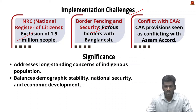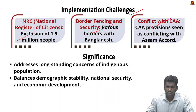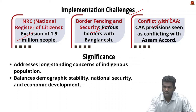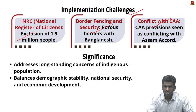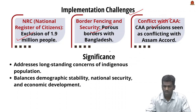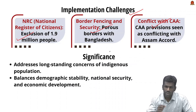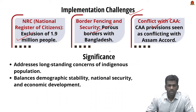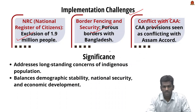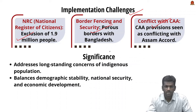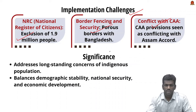There is also conflict between the Assam Accord and the Citizenship Amendment Act (CAA). The CAA grants citizenship to certain groups of immigrants who arrived by December 31, 2014, which conflicts with the complete blockage of illegal immigrants mentioned in the Assam Accord. This conflict has led to many protests in Assam. The Assam Accord is significant because it addresses long-standing concerns of the indigenous population and represents an effort to balance demographic stability with national security and economic development.